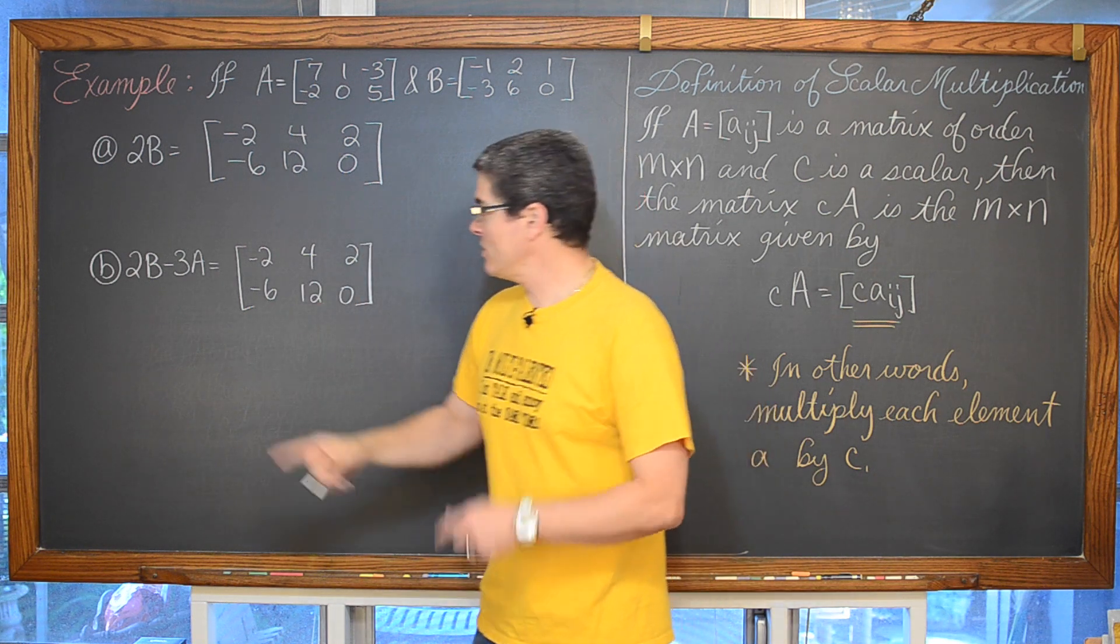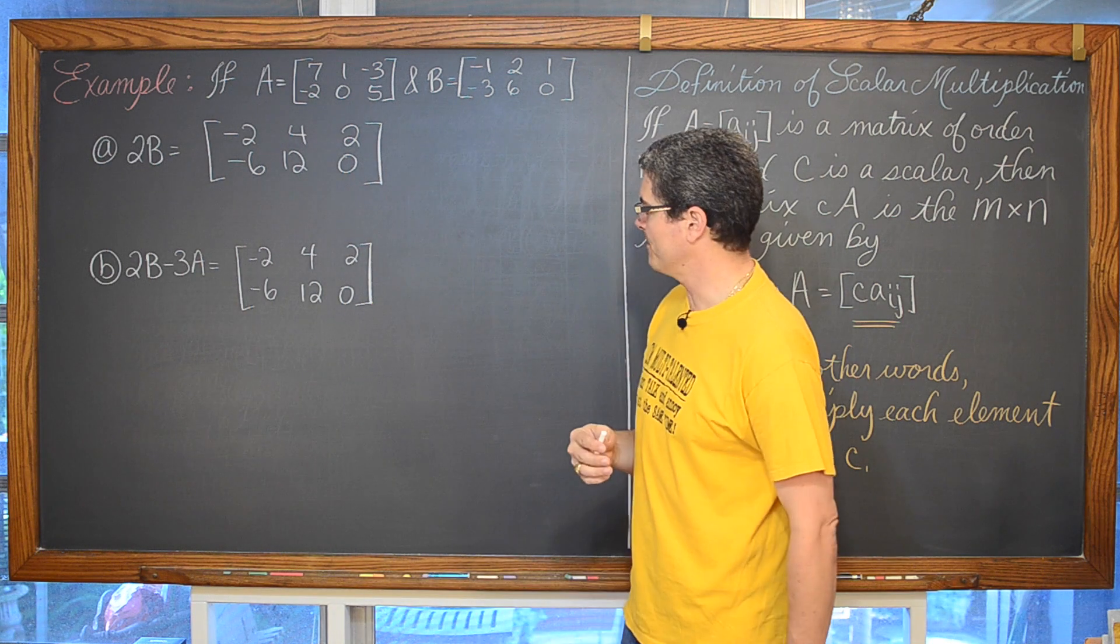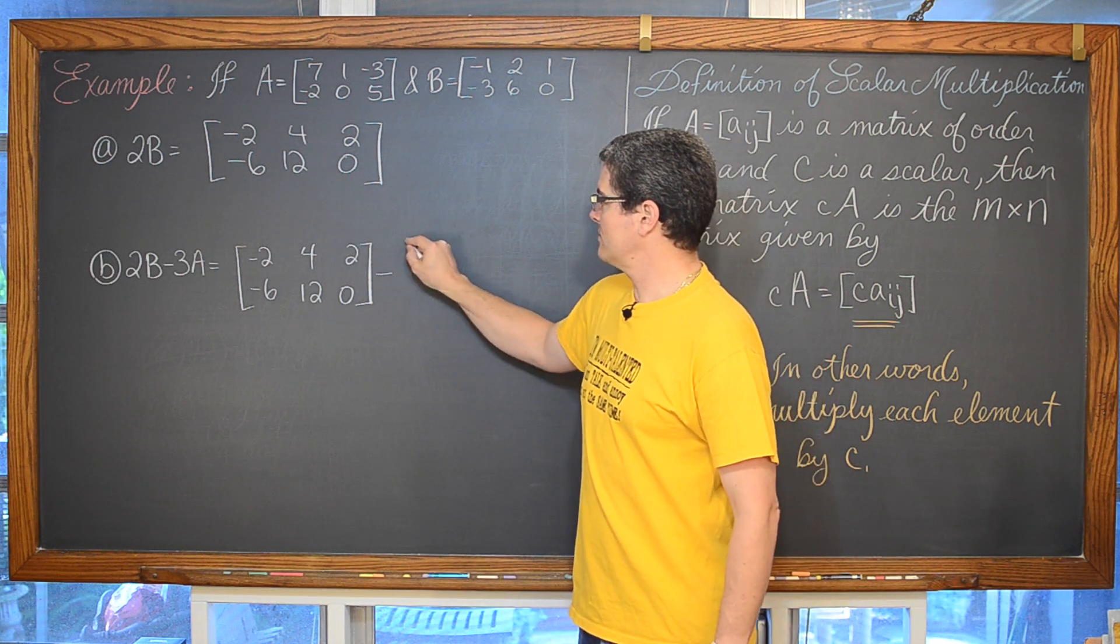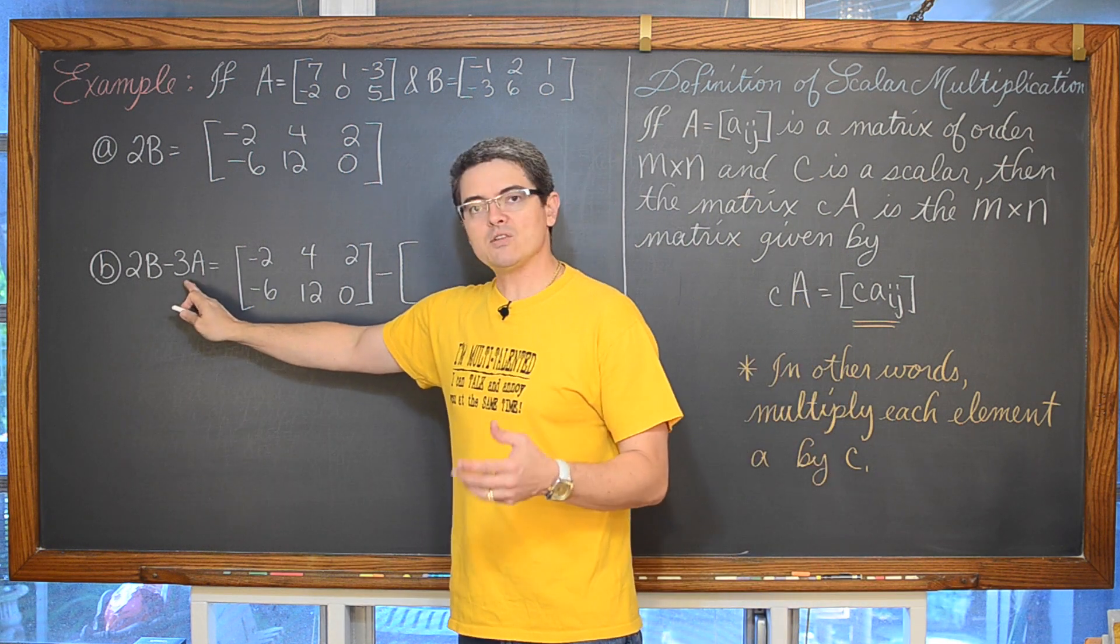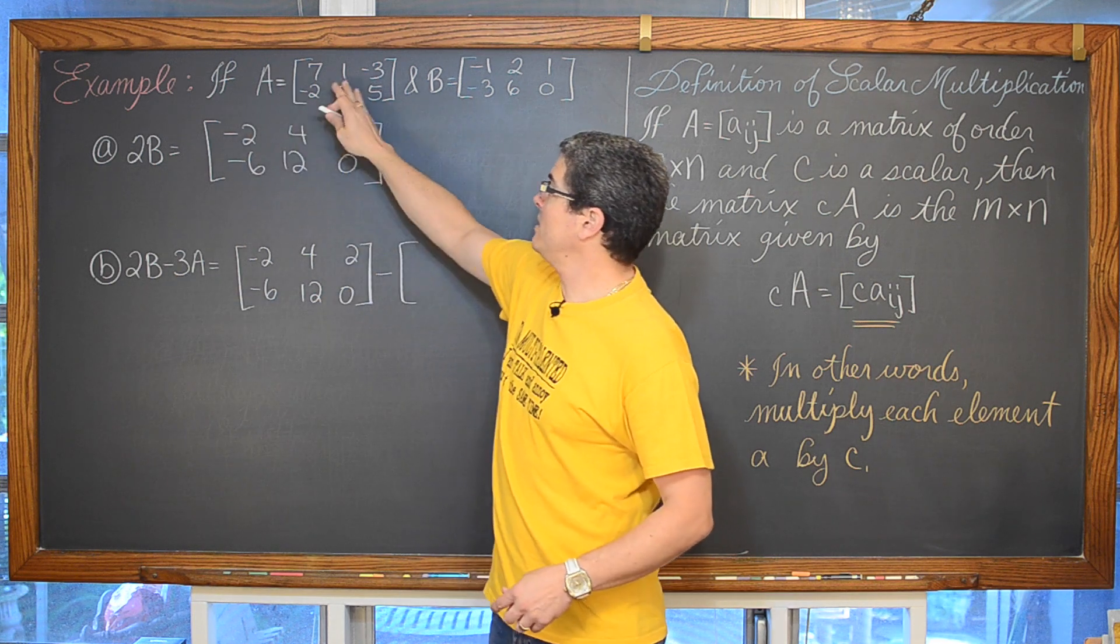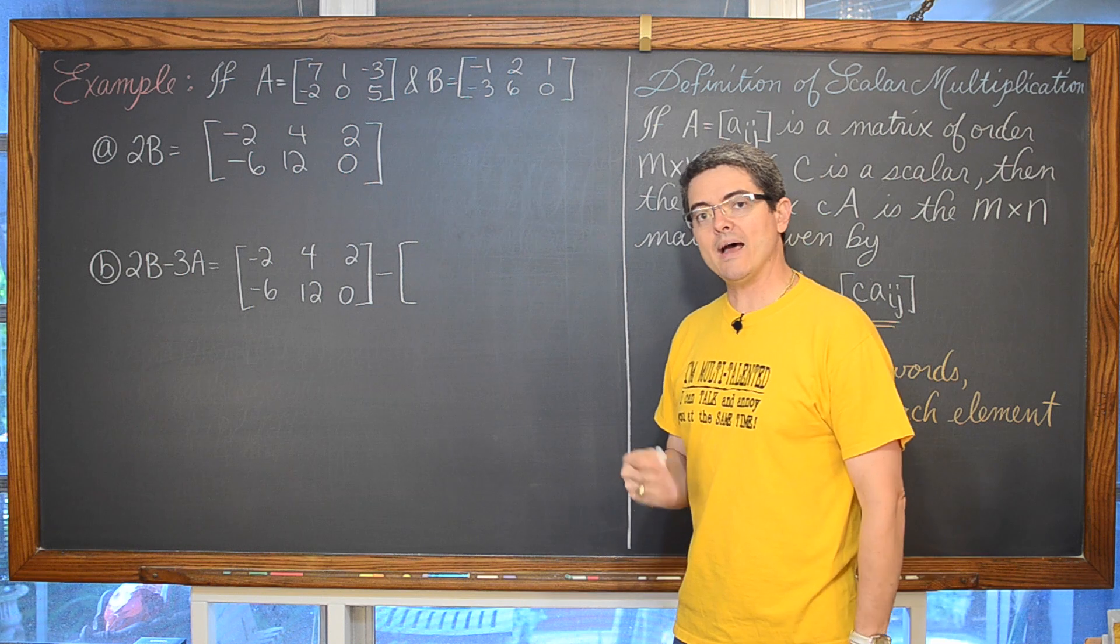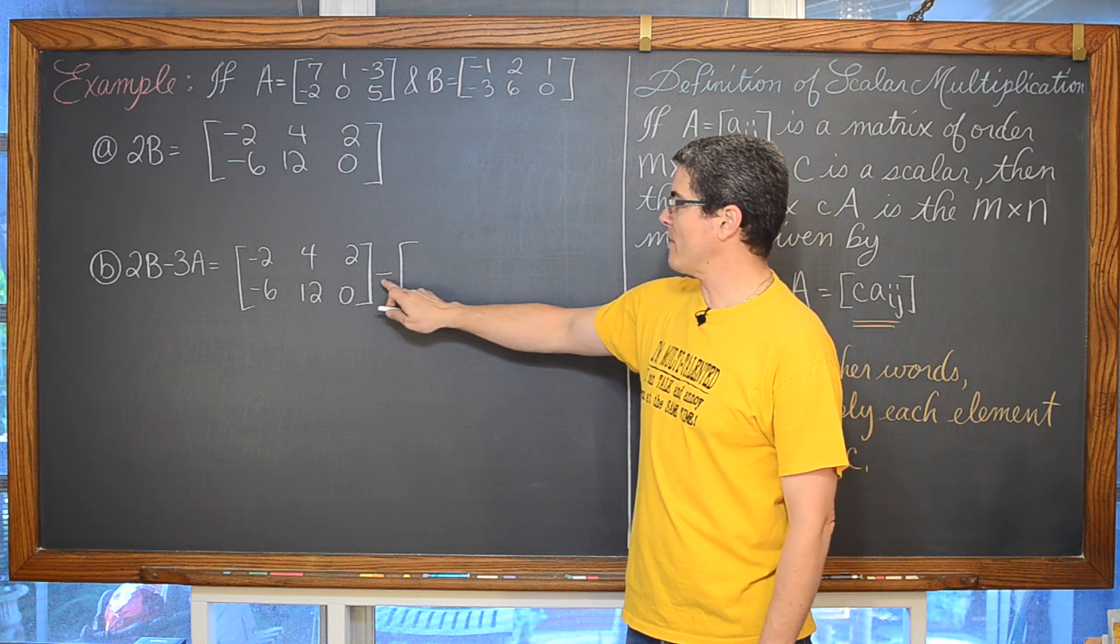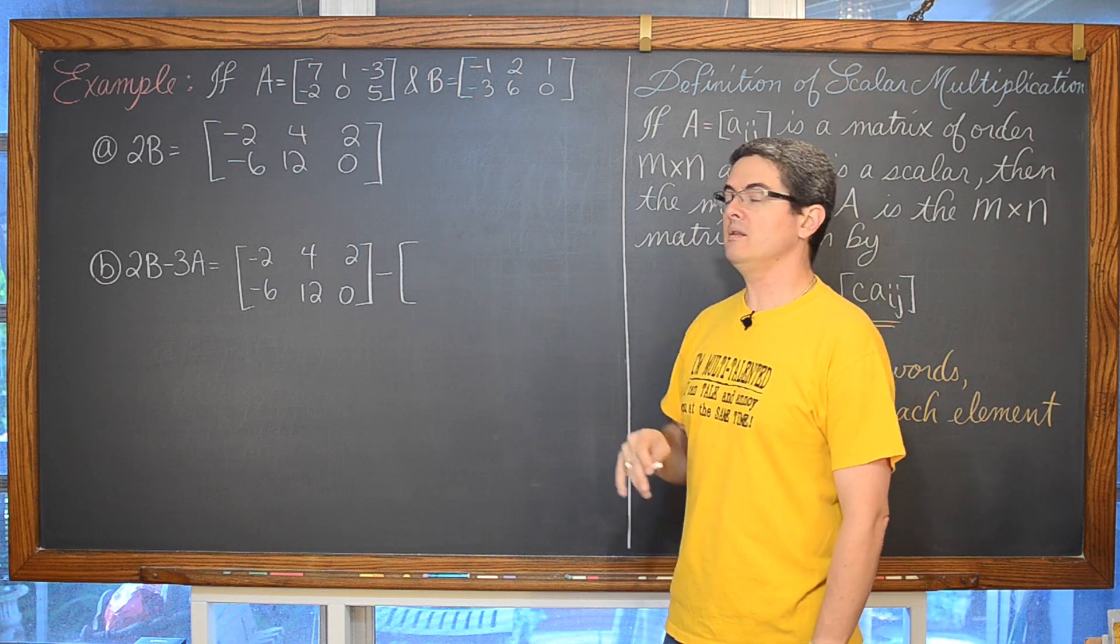Now we are going to do 2B minus 3 times A. Now you have a choice here. You can either write minus and then set up your new matrix 3A matrix by applying the scalar multiple of 3 through each of these elements.